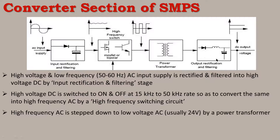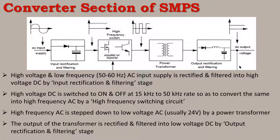The output of the power transformer — low-voltage, high-frequency AC — is rectified and filtered into low-voltage DC by the output rectification and filtering stage. However, this output is not yet regulated. If the input supply varies, the output voltage will also vary accordingly.